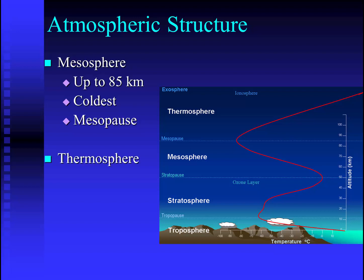Beyond the mesosphere, we'll find the thermosphere. The thermosphere is known for extremes in temperatures. Keep in mind, the pressure is so low and the amount of atmosphere here is so tenuous that there really isn't much air at all. Because the molecules are that far apart, they can move extremely fast, which is why we say the temperature may end up in the hundreds or even thousands of degrees.